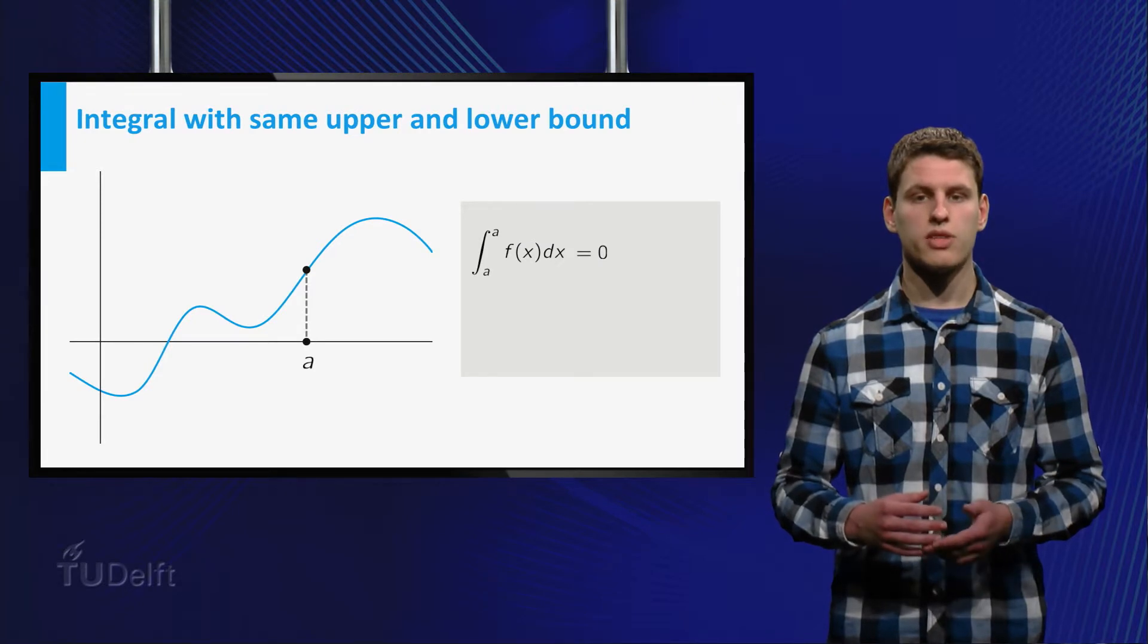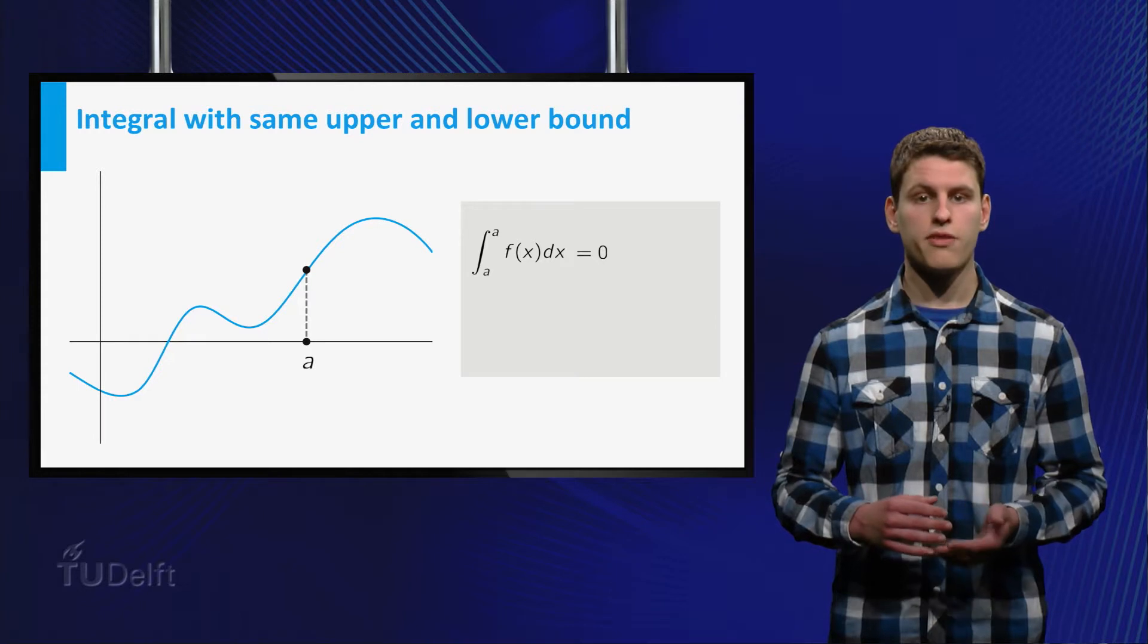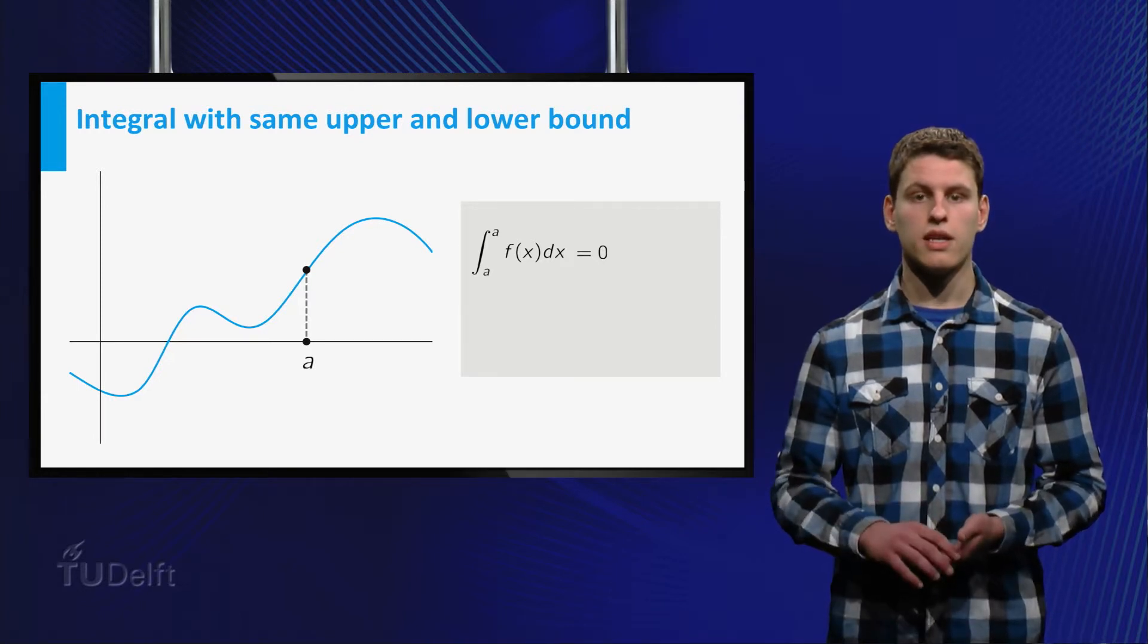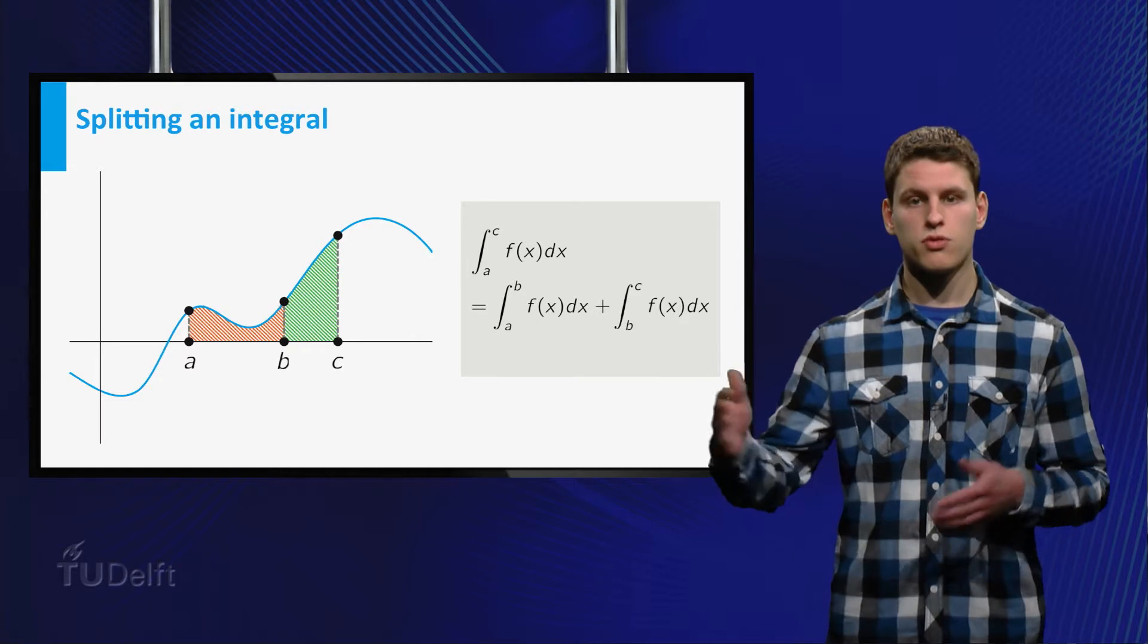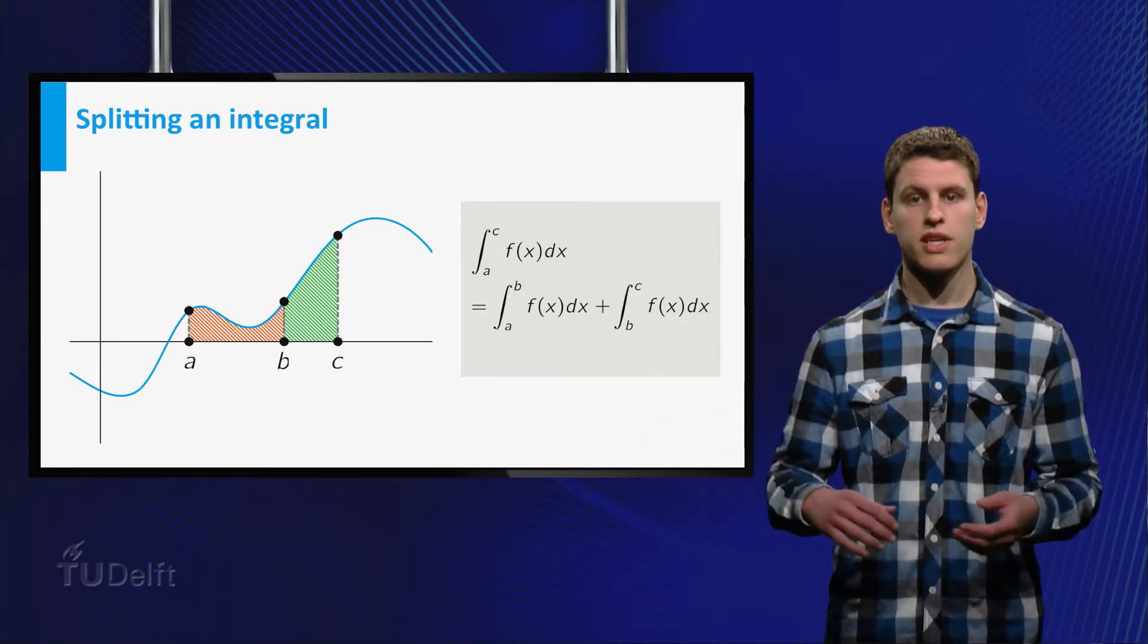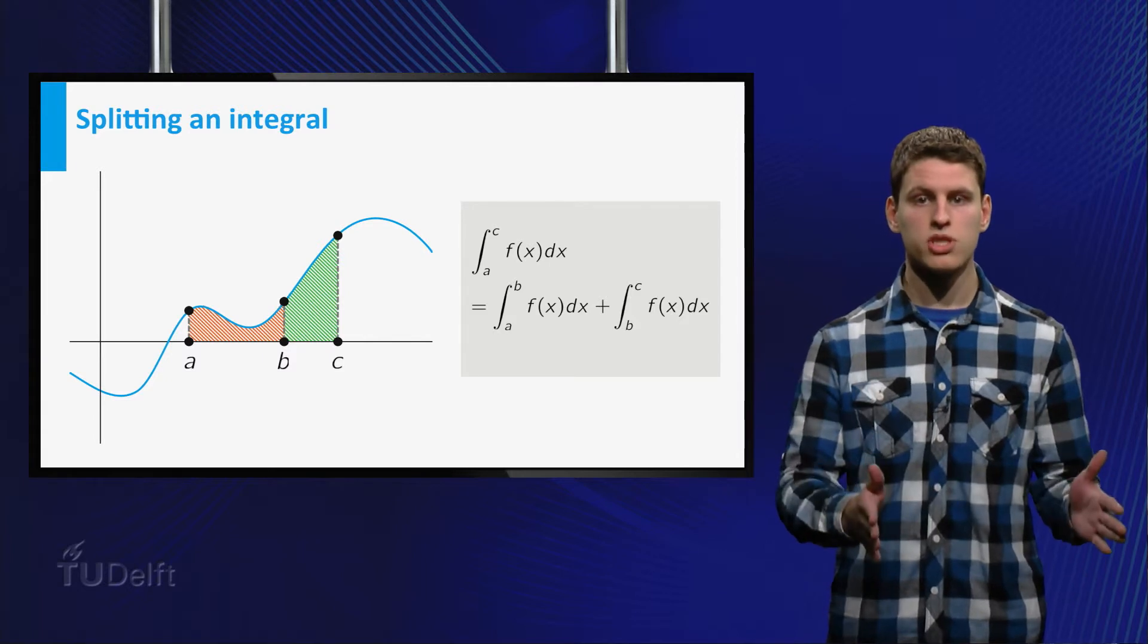Our first set of rules are about the interval of the integral. The integral from any function from a to a is always equal to zero. We can also split an integral. The integral of a function f from a to c equals the integral of f from a to b plus the integral of f from b to c.